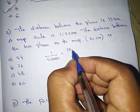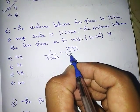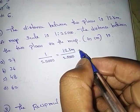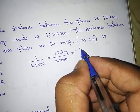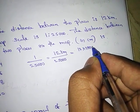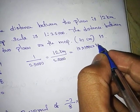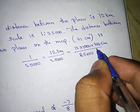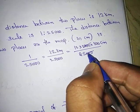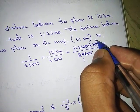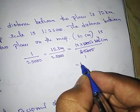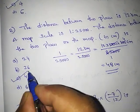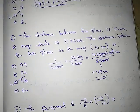They have given 12 kilometers. So 12 km ÷ 25,000. Convert kilometers to centimeters: 12 × 1000 meters × 100 centimeters, divided by 25,000. Three zeros cancel three zeros; 4 × 12 = 48 centimeters. So 48 centimeters is the answer — option C.